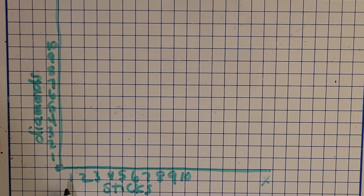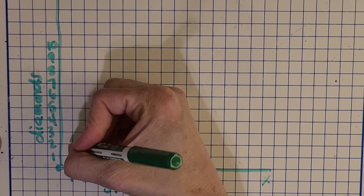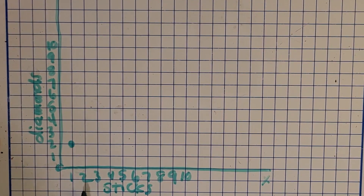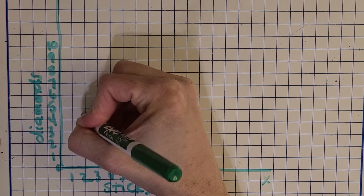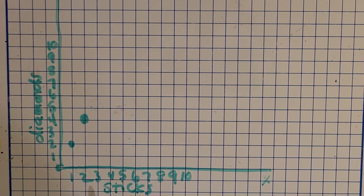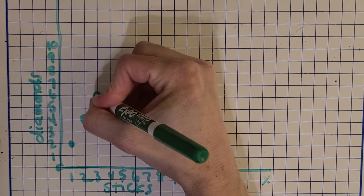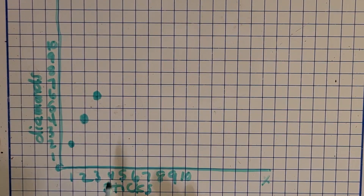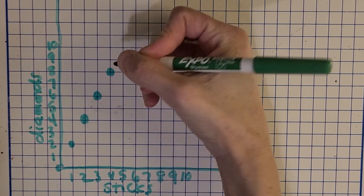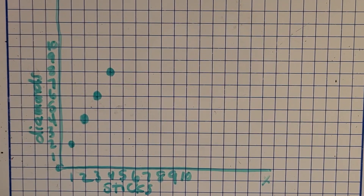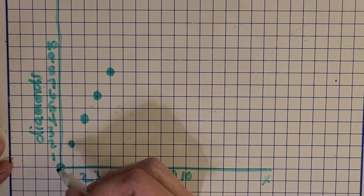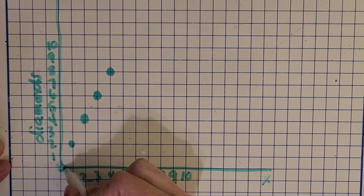When we have one stick, how many diamonds do we have? Two. Two sticks — four. Three sticks — six. And finally four sticks is eight. And if I make zero diamond swords, then we have zero sticks and zero diamonds. You'll notice this goes through the origin, zero comma zero, because it's a multiplicative pattern.